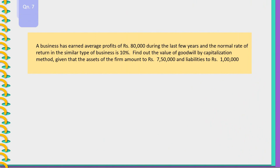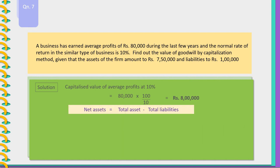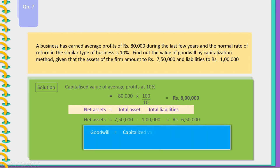Question 7: A business has earned average profits of Rs. 80,000 during the last few years and the normal rate of return in a similar type of business is 10%. Find out the value of goodwill by the capitalization method, given that the assets of the firm amount to Rs. 7,50,000 and liabilities to Rs. 1 lakh. Capitalized value of average profits at 10% equals 80,000 into 100 by 10, that is Rs. 8 lakh. Net assets equal 7,50,000 minus 1 lakh equals Rs. 6,50,000. Goodwill equals capitalized value minus net assets: 8 lakh minus 6,50,000 equals Rs. 1,50,000.